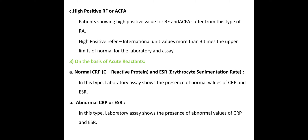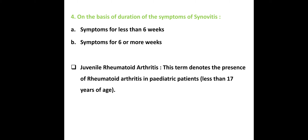Classification on the basis of acute phase reactants: normal CRP versus abnormal CRP — CRP stands for C-reactive protein. Classification on the basis of duration of symptoms of synovitis: less than 6 weeks or more than 6 weeks.